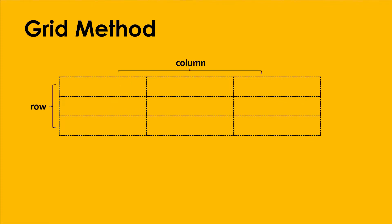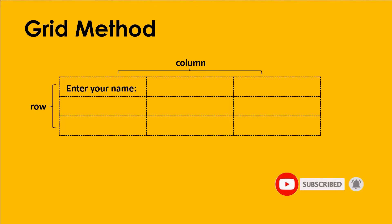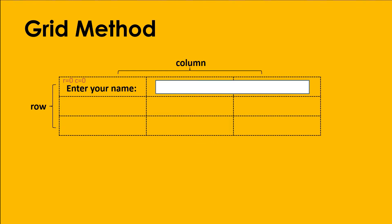The number of rows starts with zero, same with the column. For example, if you want to place a label 'Enter Your Name', the row number is zero and the column number is zero - that is the address for that label. For a text box beside it, the address would be row zero, column one. You can also merge or combine two or more columns or rows - this text box occupies two columns.